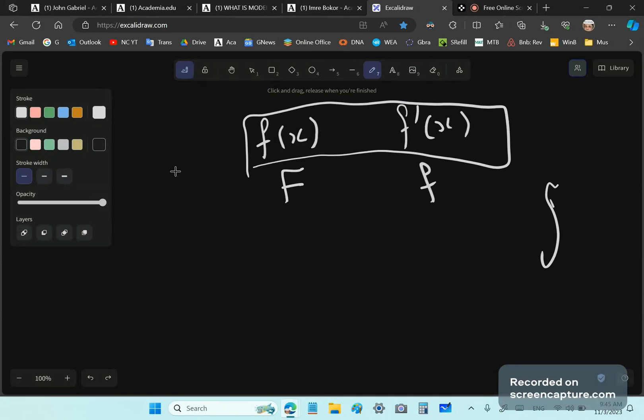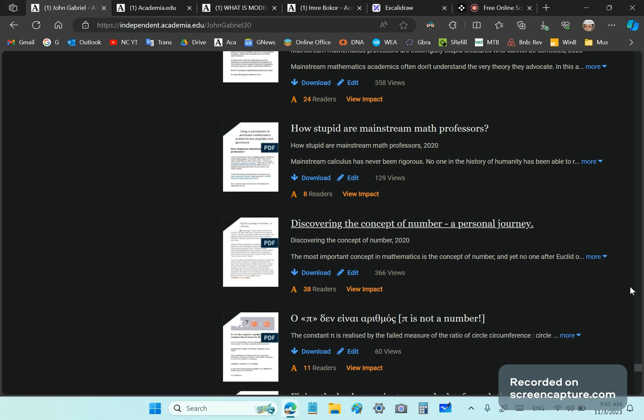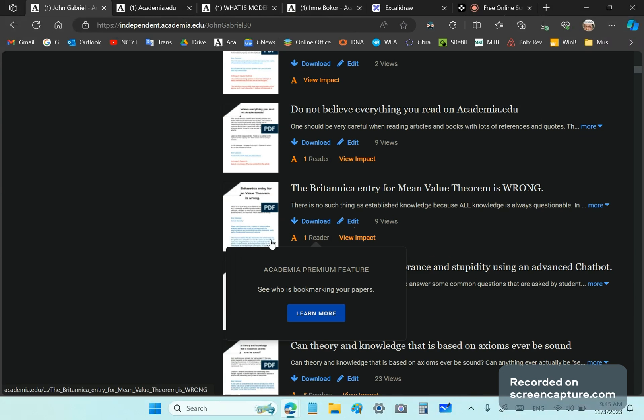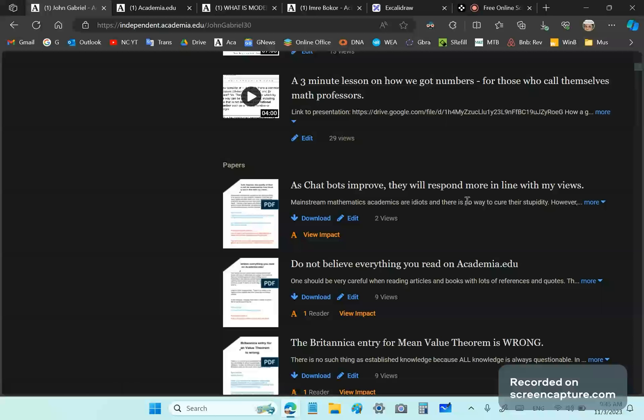In an article I wrote recently on academia, I talked about the ultra filters and non-standard analysis. You can read that. It's a very interesting article. I've said that as chatbots improve, they will respond more in line with my views. They will agree more with me than they do with the people who create them because the people who create them are a bunch of morons. Not really a bunch of morons, but I think you know what I mean. They're not as smart as they think they are. They magnify their abilities way beyond what's realistically true.